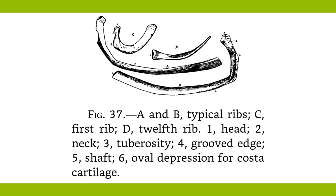The costal cartilages serve to prolong the ribs and greatly increase the elasticity of the chest wall. They grow longer down to the seventh and then decrease again in length. The ribs, except the first and second, which are protected by the clavicle, are frequently broken. Such a break causes pain in breathing, and sometimes the end of a rib pierces the lung tissue and swelling all over the body results due to the presence of air.